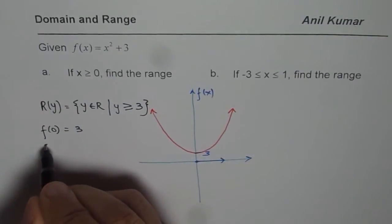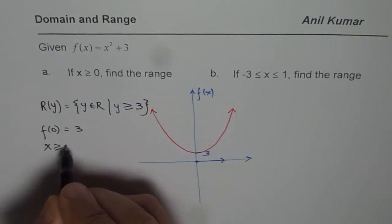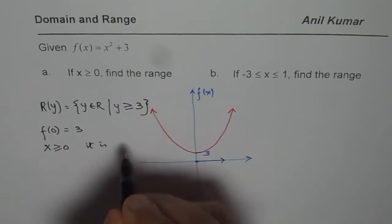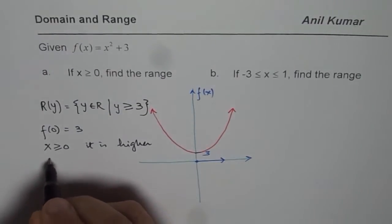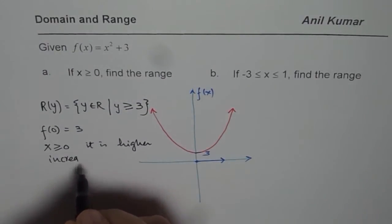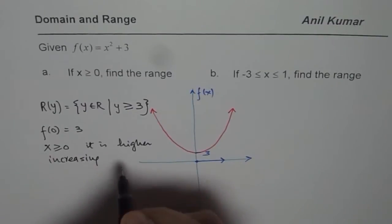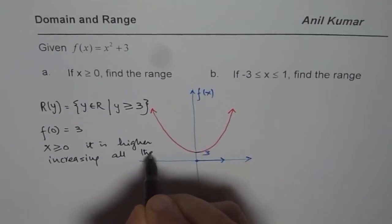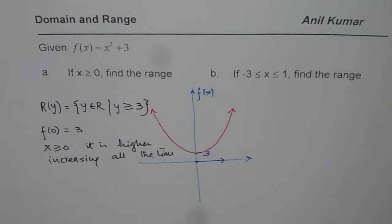So as x is greater than or equal to 0, it is higher, much higher. So it is increasing all the time in its domain. So that is why we get this particular range for the function.